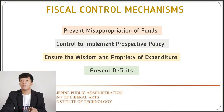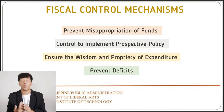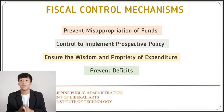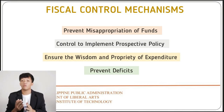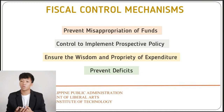Second is control to implement prospective policy, where proactive administration inhibits governmental units from directly transacting and negotiating money matters, since such transactions are officially channeled through the Department of Budget and Management in the form of budget estimates as endorsed by the President. Third is to ensure the wisdom and propriety of expenditures — claims for payment from public funds must establish legality, prudence, reasonableness, and the morality of the claim, and a review of existing contracts and transactions should be made.